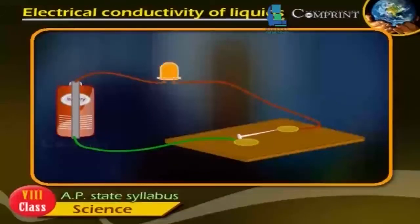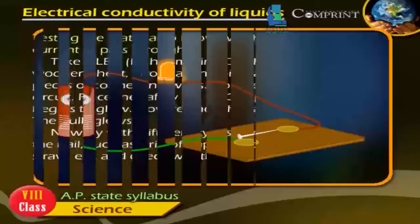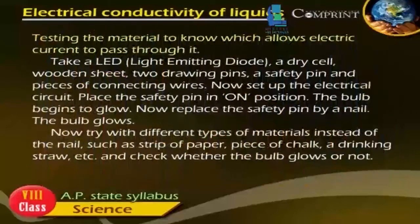The bulb glows. Now try with different types of materials instead of the nail, such as a strip of paper, a piece of chalk, a drinking straw, etc., and check whether the bulb glows or not.